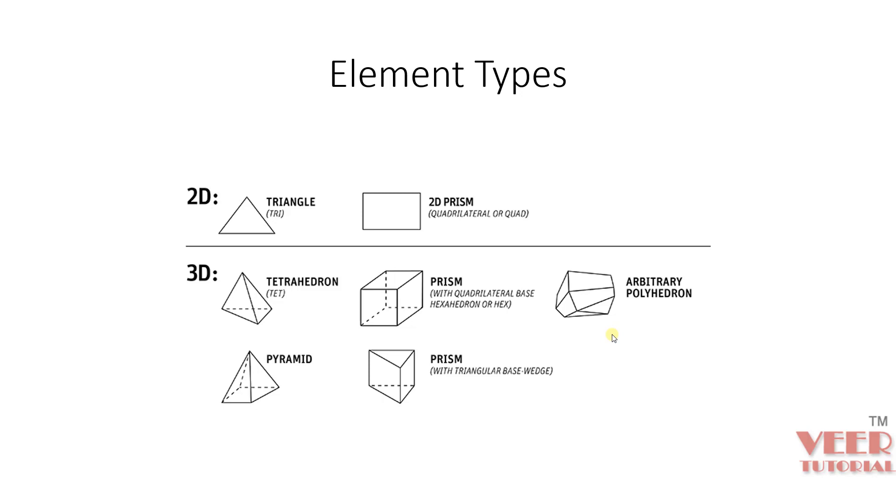Hello friends. In this lecture, we will continue with meshing in ANSYS Workbench and we are going to learn about different types of elements in meshing. So first of all, let us understand what are different types of elements in meshing. As we already know, in this course, we have used three types of elements: 1D element, 2D element, and 3D element.